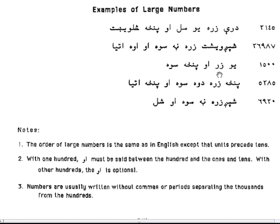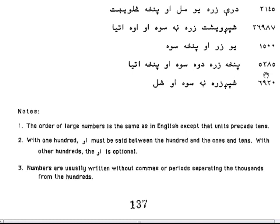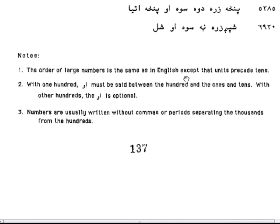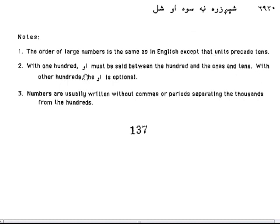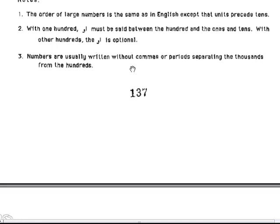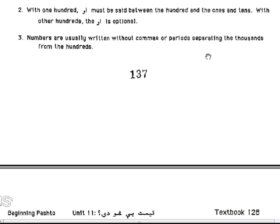1,500: Yawzar (1000) Au Pinza-Salor — 1000 and 500, Pinza-Salor. 5,285: Pinza-Zara, Dwa-Saw, Au, Pinza-Atya. 6,930: Spagwisht Zara, Na-Saw, Au, Shil. The order of large numbers is usually the same as in English, except that the units precede the tens. With 100, Au must be set between the hundred and the ones and tens. With other hundreds, Au is optional. Numbers are usually written without commas or periods separating thousands from hundreds.